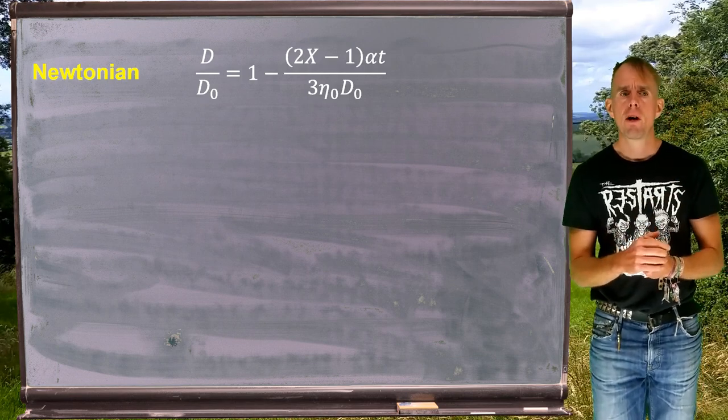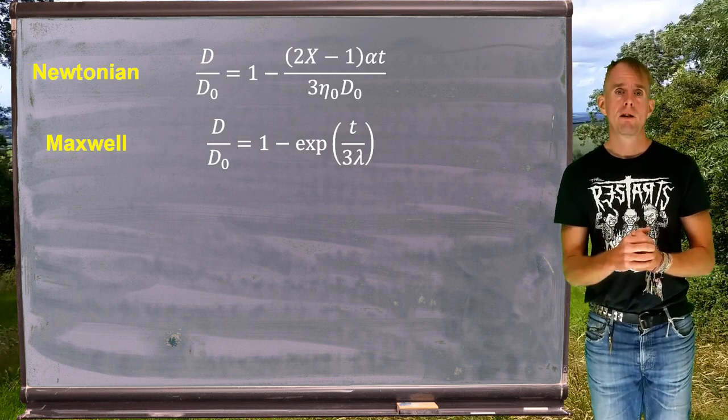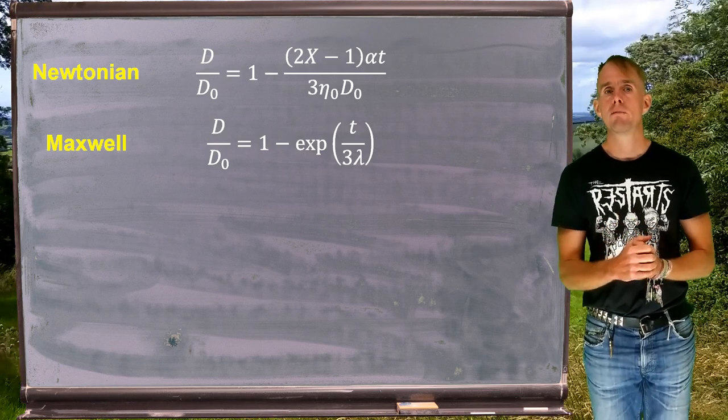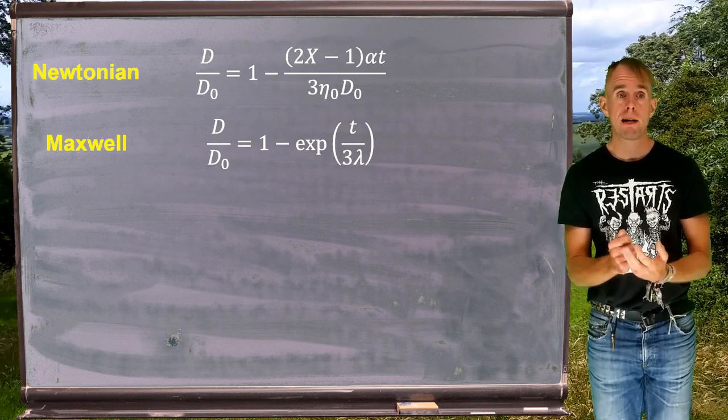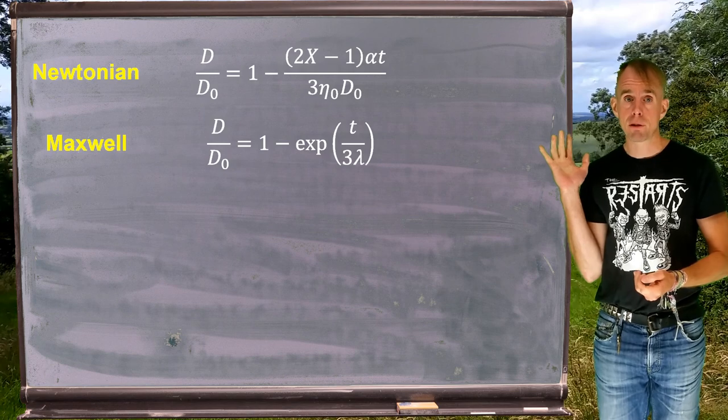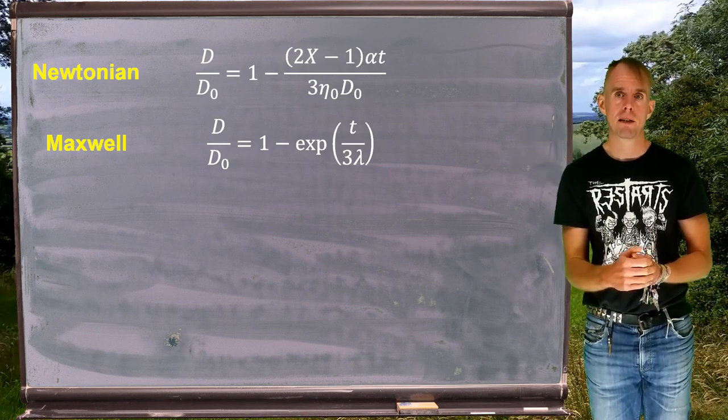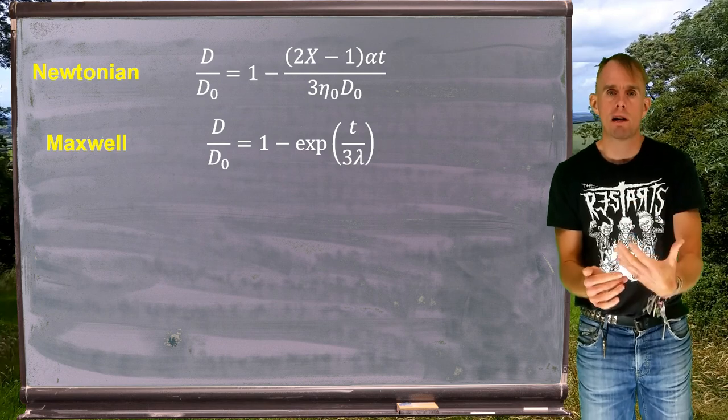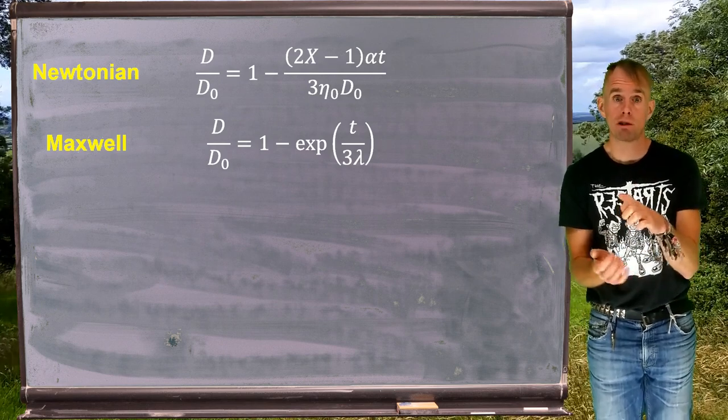For viscoelastic fluids, we have different diameter thinning curves. So the first viscoelastic model we're going to meet in section B of this course is the Maxwell fluid. Now, for Maxwell, we no longer have a viscosity. We have a relaxation time that governs filament thinning. This assumes that the dominant stress in the viscoelastic fluid is due to elastic forces, not viscous forces.